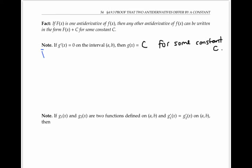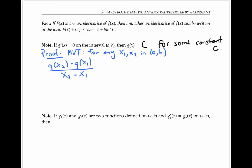This statement follows from the mean value theorem, because the mean value theorem tells us that for any x₁ and x₂ in our interval, the average rate of change between x₁ and x₂ is equal to the derivative at some number x₃ in between x₁ and x₂.